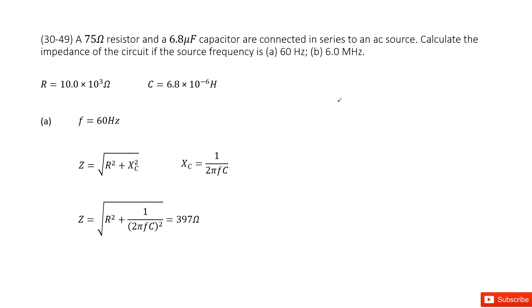Chapter 30 is about inductance, electromagnetic oscillations, and AC circuits. So we have RC circuits here. You can see the resistance is given, capacitance is given.